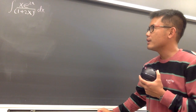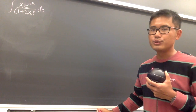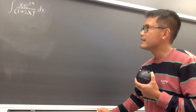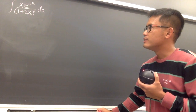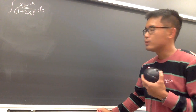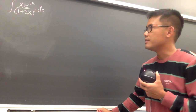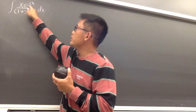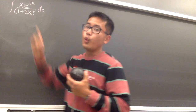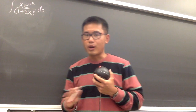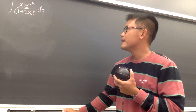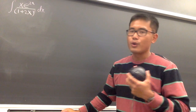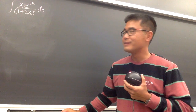Can we do it by u-substitution? I don't think so. And trig sub wouldn't be a good idea either. And because right here we have e to the 2x, we cannot do partial fractions either. So what other techniques do we have?